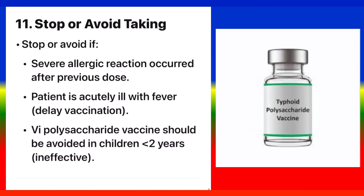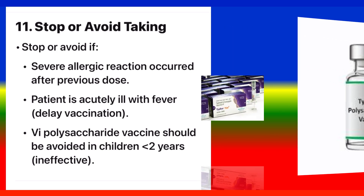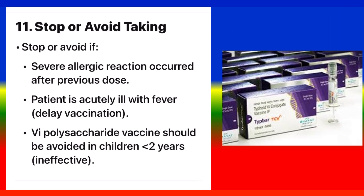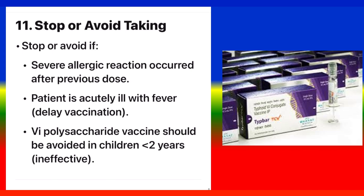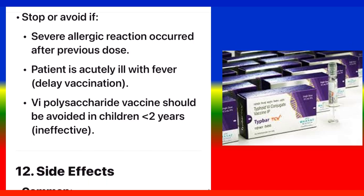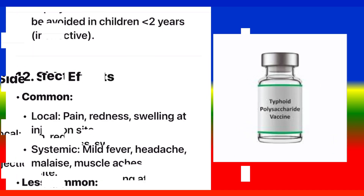Stop or avoid taking if a severe allergic reaction occurred after a previous dose. If the patient is acutely ill with fever, delay vaccination. The Vipolysaccharide vaccine should be avoided in children under 2 years as it is ineffective.